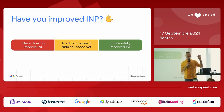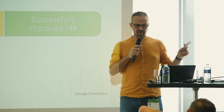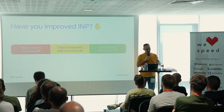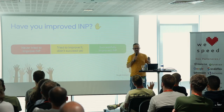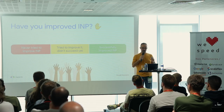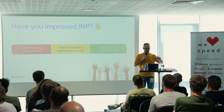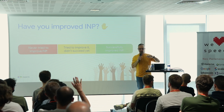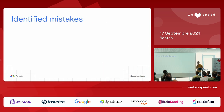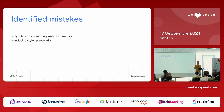Show of hands now: never tried to improve INP — about 10–15%. Tried but didn't succeed — about 5%. Successfully improved INP — about 40%. The identified mistakes are: one, synchronous listening analytics beacons — by far the most frequent; two, inducing style recalculation; and three, executing too much UI-related JavaScript at once.